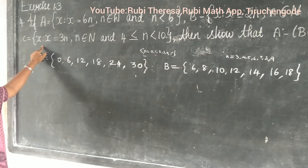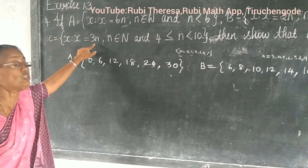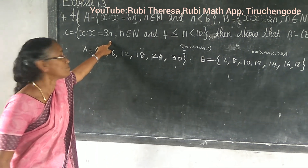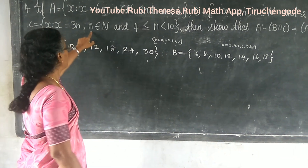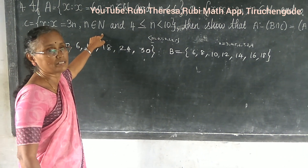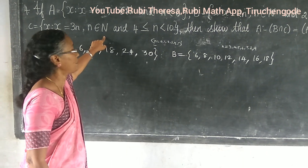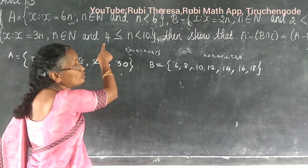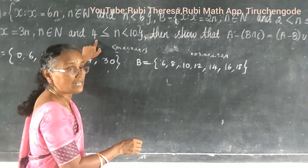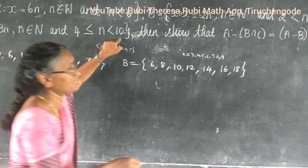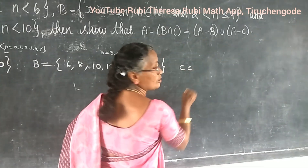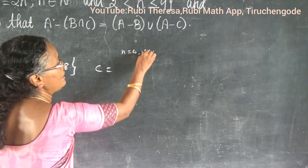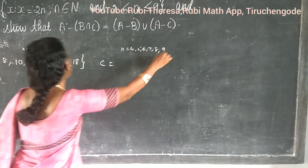Next, C equals x such that x equals 3n — multiples of 3. n belongs to natural numbers, n is greater than or equal to 4 and less than 10. So we start from 4. n equals 4, 5, 6, 7, 8, 9.